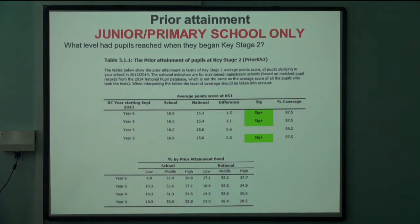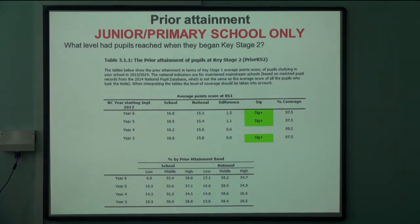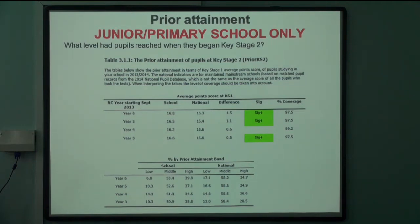I've highlighted which of the reports each table comes from, because some tables aren't in both. The average point score at key stage one is only in a primary or junior school RaiseOnline. It's an interesting question to ask — if we had as a federation one RaiseOnline report, what would that say from reception to year six? You can see that for all cohorts last year, apart from year four, the starting point was significantly higher than the national. The assumption therefore is that those cohorts, if they just make expected progress, will finish significantly higher than the national.